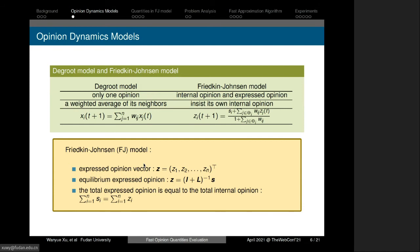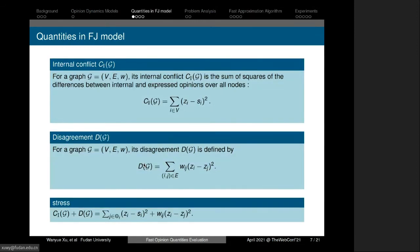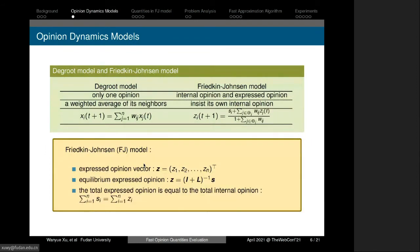Opinion evolves as a weighted average of its corresponding internal opinion and the expressed opinions of neighbors. The update equation is quite different from the DeGroot model. We can find that the FJ model seems closer to reality. Our work is based on the FJ model.